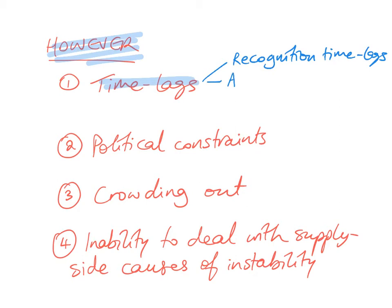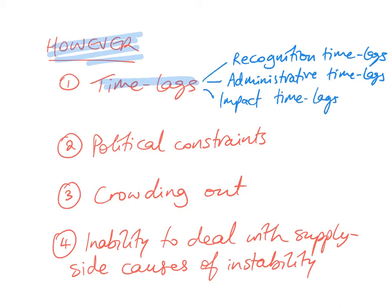Number two is administrative time lags — it takes time to put together a plan and then pass it through Parliament or Congress. The government can't just change fiscal policy at whim; it has to be approved. And number three, there are impact time lags. Even once you've recognized the problem and passed the appropriate expansionary or contractionary fiscal policy, it takes time for this to make an impact. So there are time lags when it comes to fiscal policy.